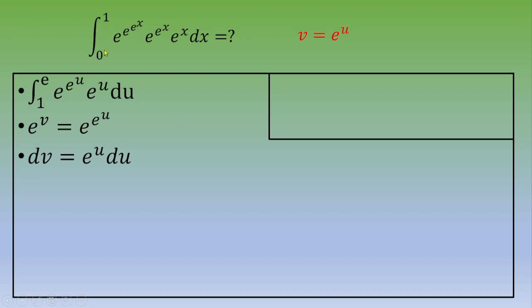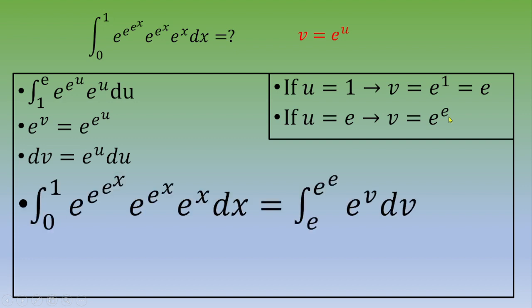Then we're going to focus on these two limits, one and e. So if u equals one, v equals e to the first power, which is e. And now if u equals e, then v equals e to the e.